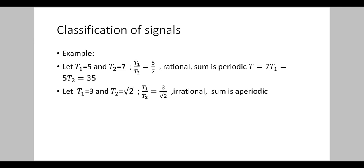Example 1: Let T1 = 5 and T2 = 7. To check whether the resultant signal x1(t) + x2(t) is periodic, we find T1 by T2 = 5 by 7. We can see that the ratio T1/T2 is a rational number. So we can say that the sum is periodic, and the period is T = 7·T1 = 5·T2 = 35.